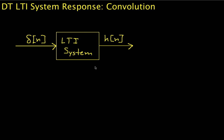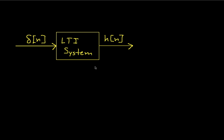Hello and welcome to this video in which we will show how the output of a discrete time linear time invariant system is found as the convolution of its input and of a function called its impulse response. This turns out to be a very useful property of linear time invariant systems. We have an LTI system with a delta function going in and some function h of n coming out. Because this is the response to a delta function, which we also call an impulse, we call this the impulse response.